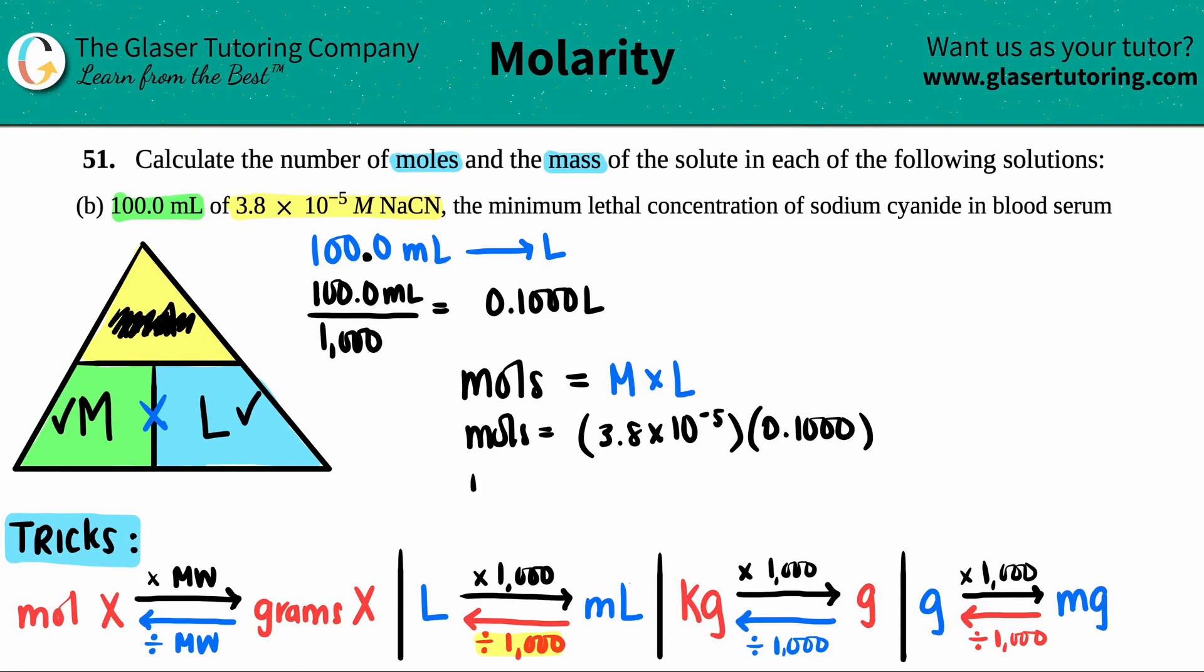The amount of moles that I have equal the molarity, which is 3.8 times 10 to the negative fifth. You could keep the units in there. It doesn't really matter. Just as long as you have the units at the end. So here we go. This is the moles of my solute. 3.8 times 10 to the negative fifth times 0.1 should be 3.8 times 10 to the negative sixth. And that's moles of the solute. They told me that this was NaCN. So that's the answer to my first part.